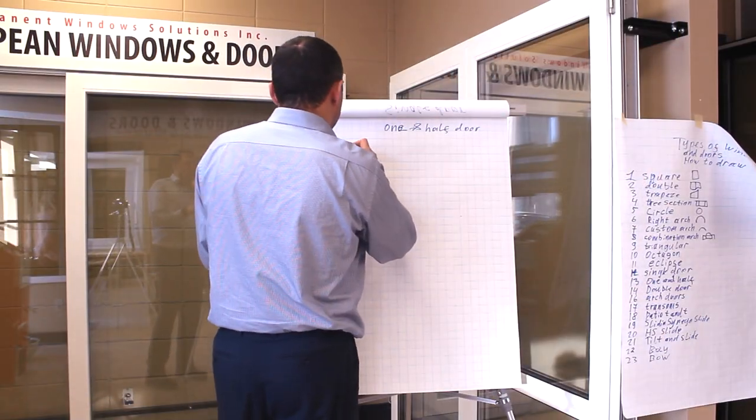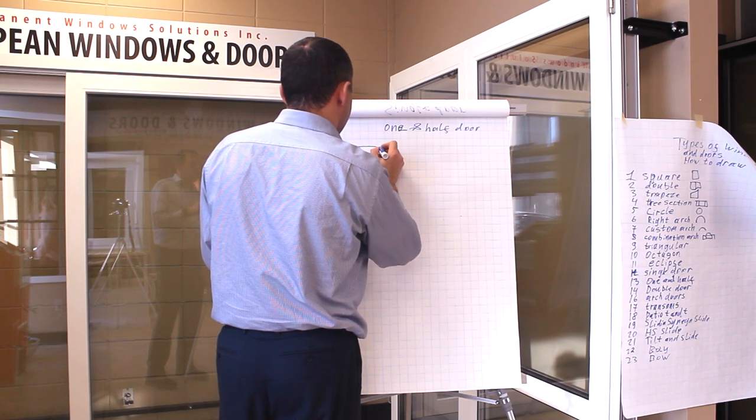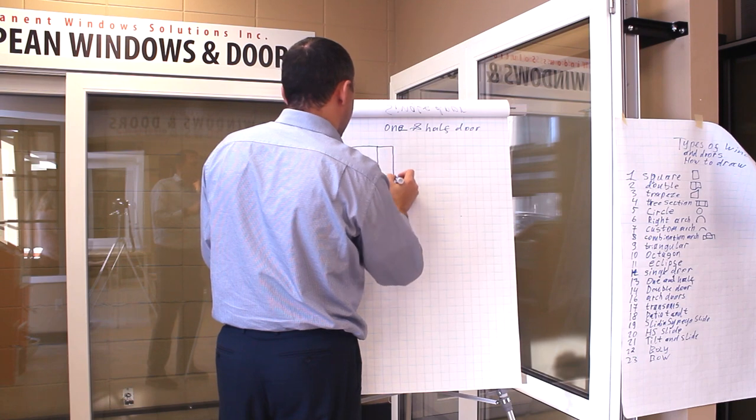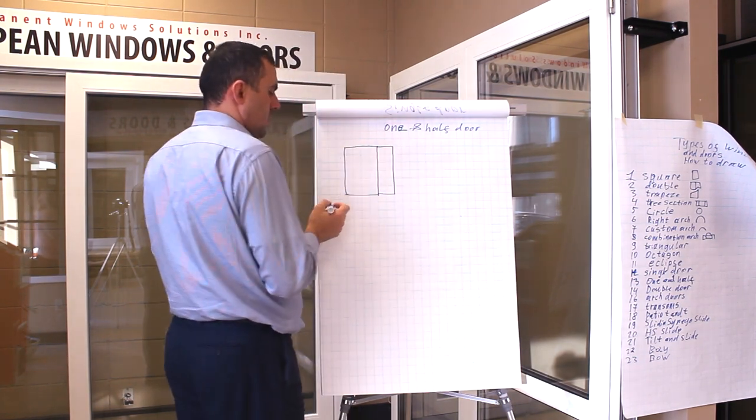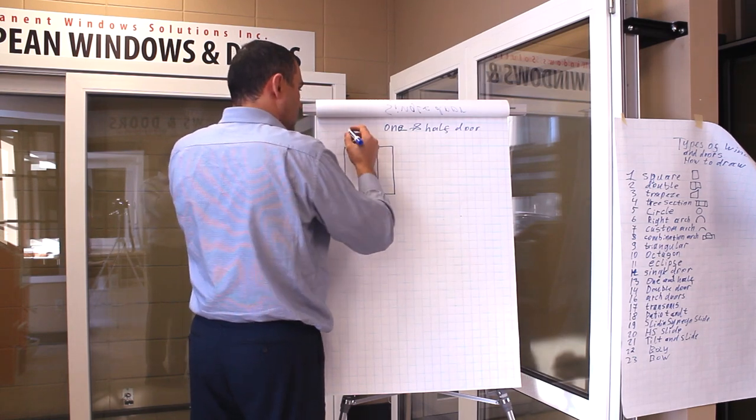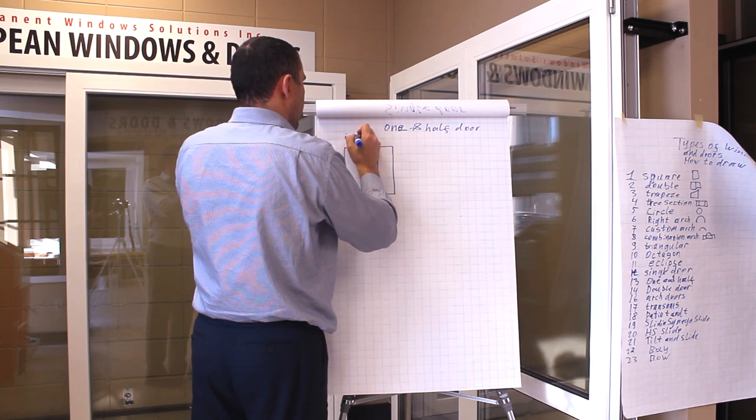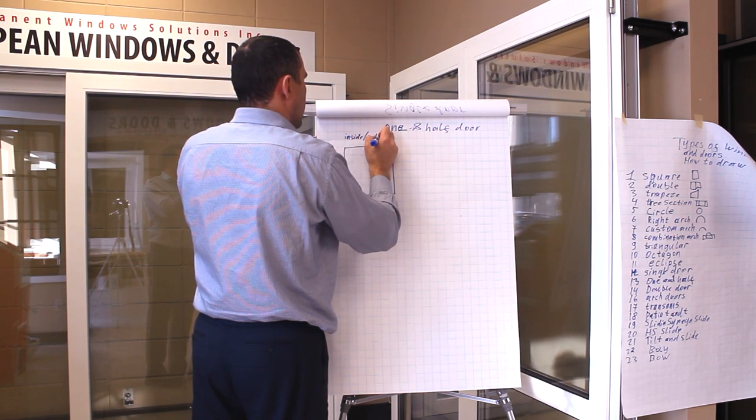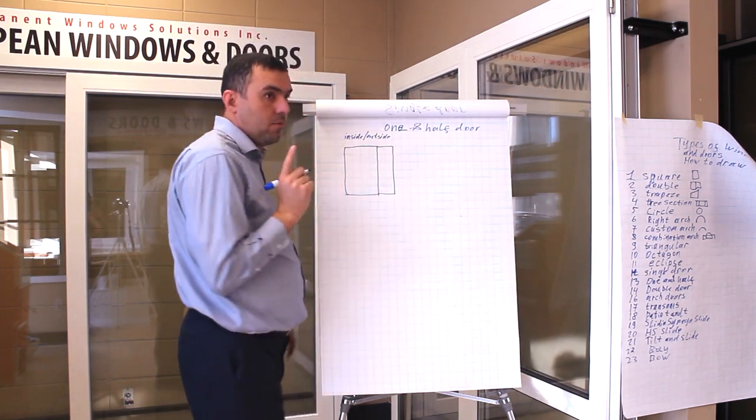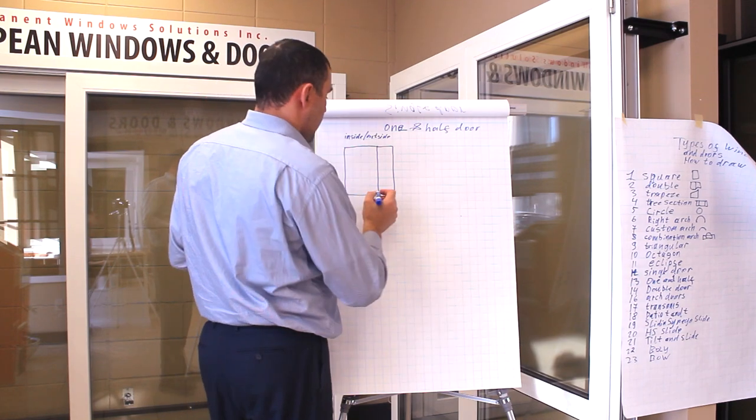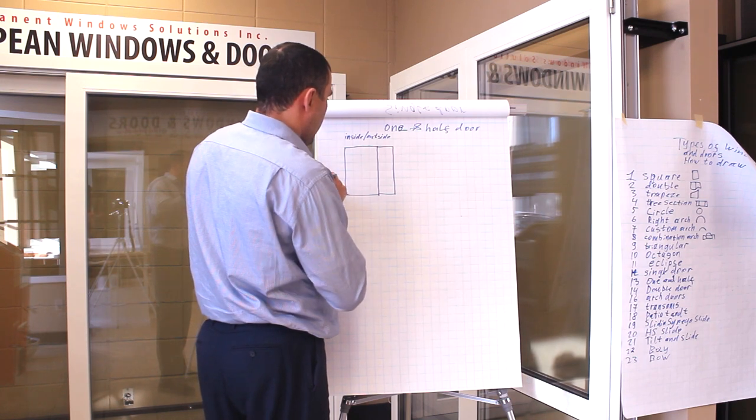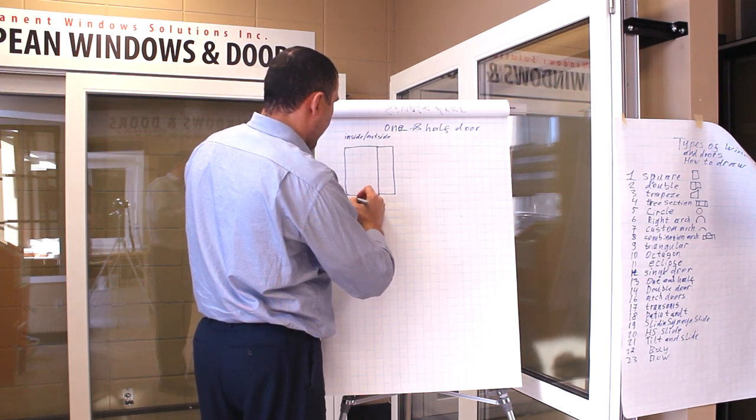So, one and a half doors, right or left, when you draw the one inside or outside, you have to let me know. And for the one and a half doors, you're giving me only the width for the one and a half.